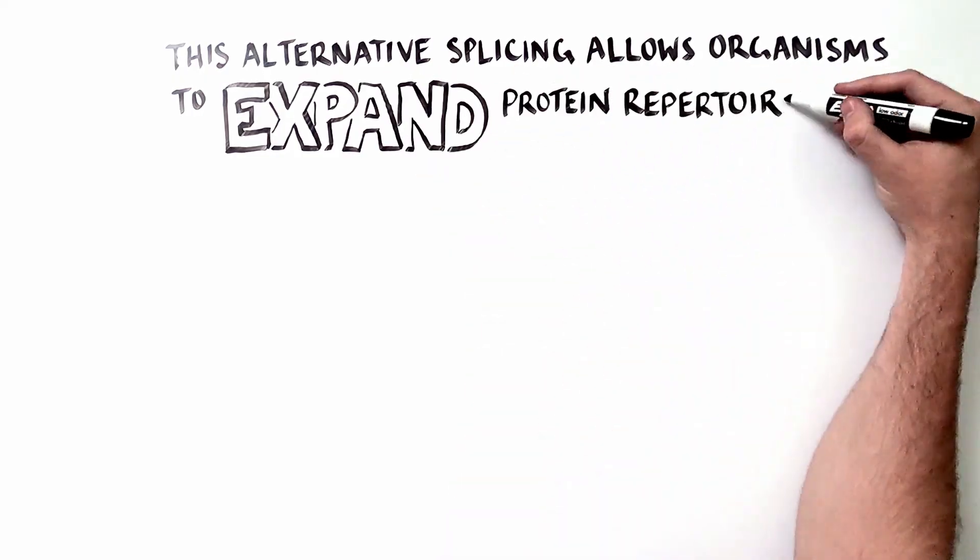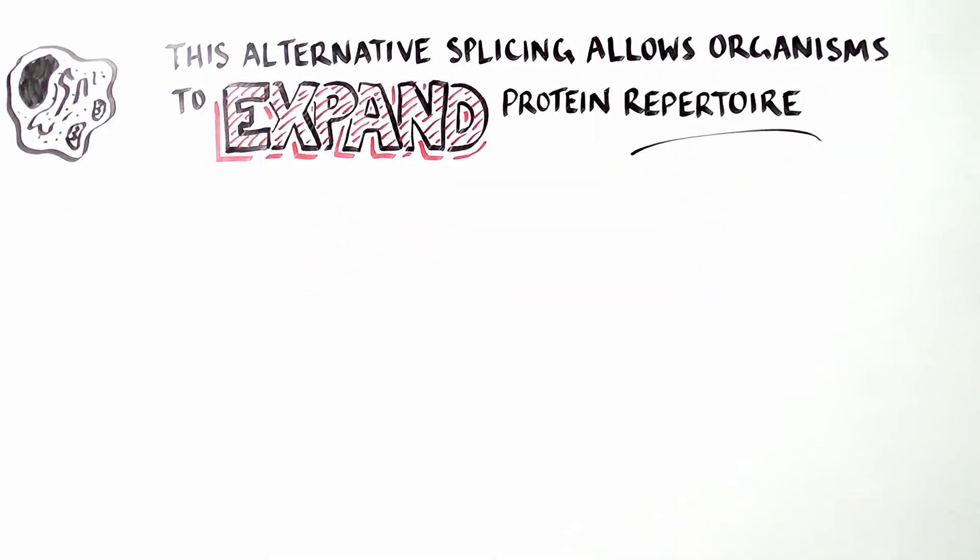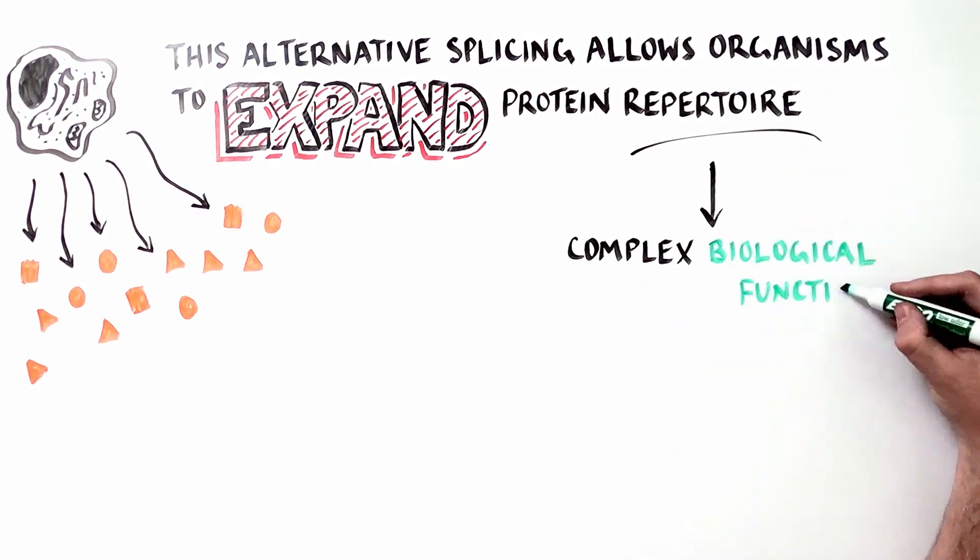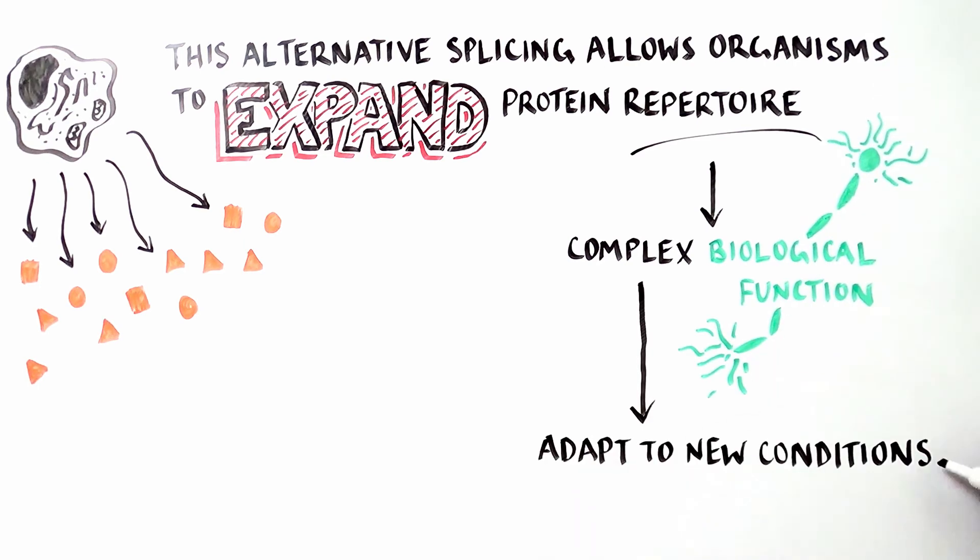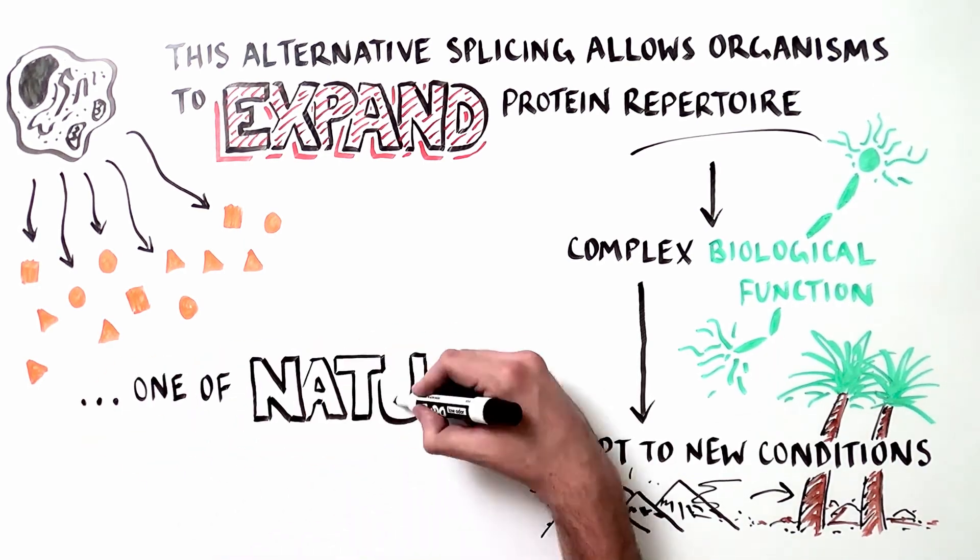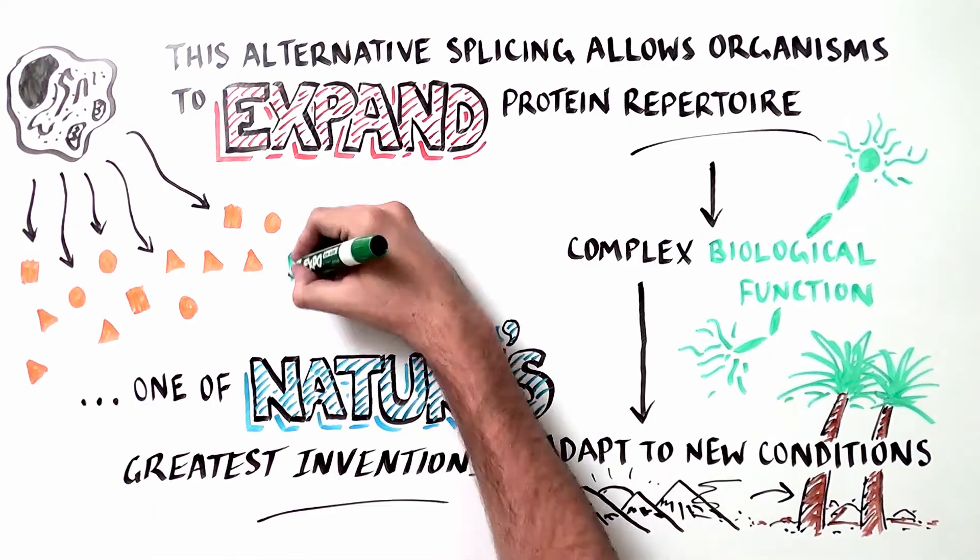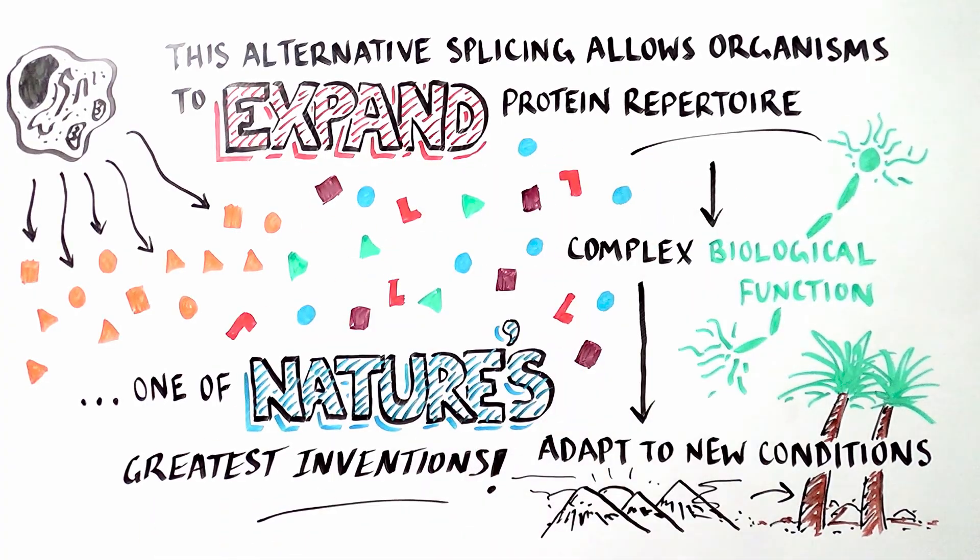Alternative splicing enables organisms to expand the repertoire of proteins, which allows them to evolve complex biological functions, as well as adapt to new environmental conditions. It is truly one of nature's greatest inventions.